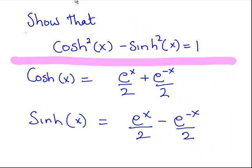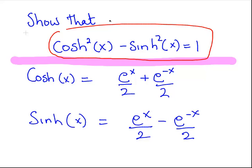So we've proved what we're looking to prove, that cosh squared x minus sinh squared x is equal to 1. And we'll leave it there.